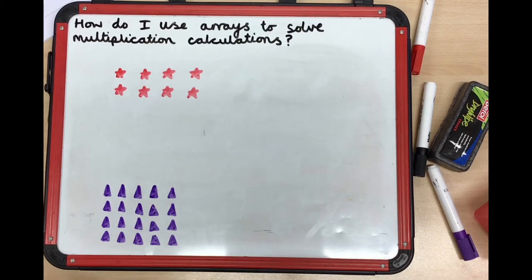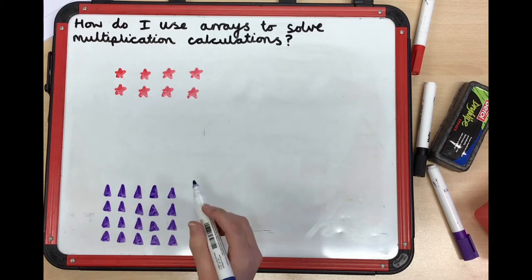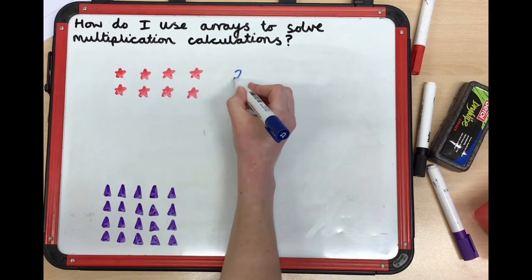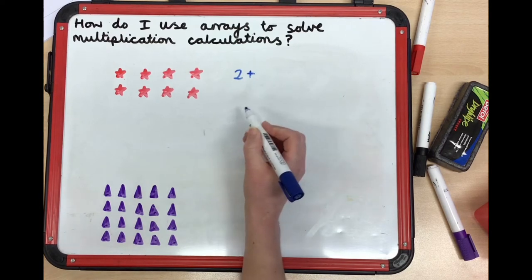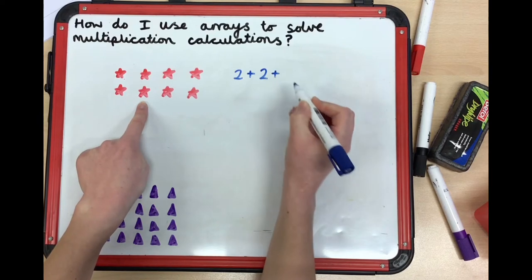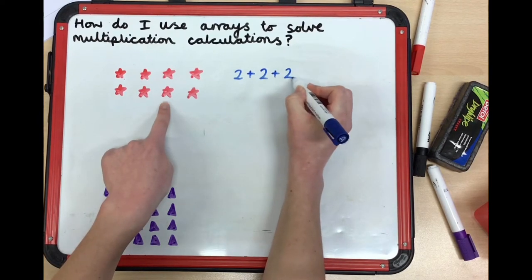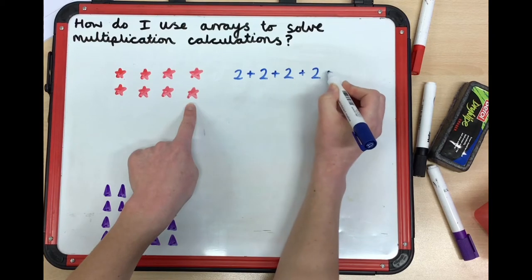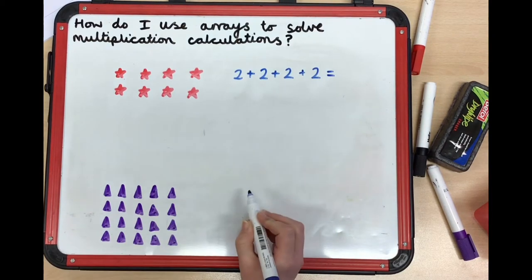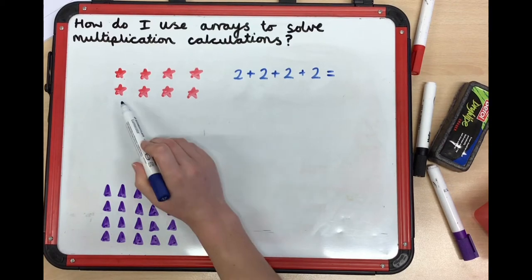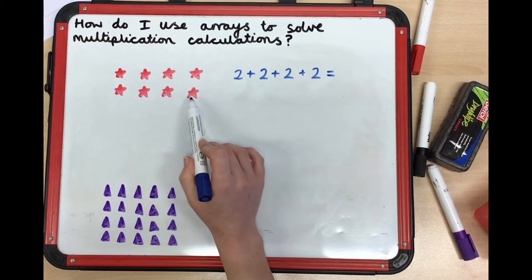First of all, I'm going to write the repeated addition for this array. So I could write two add two add two add two equals. Now, to find the total, I'm going to count in twos: two, four, six, eight.